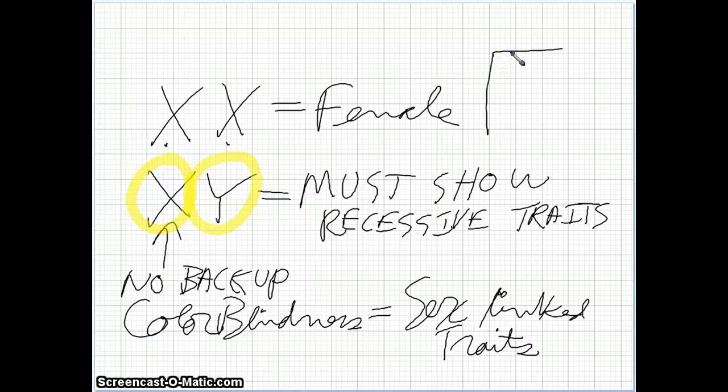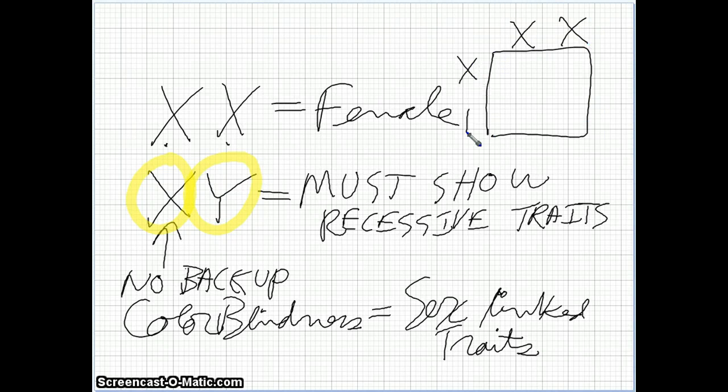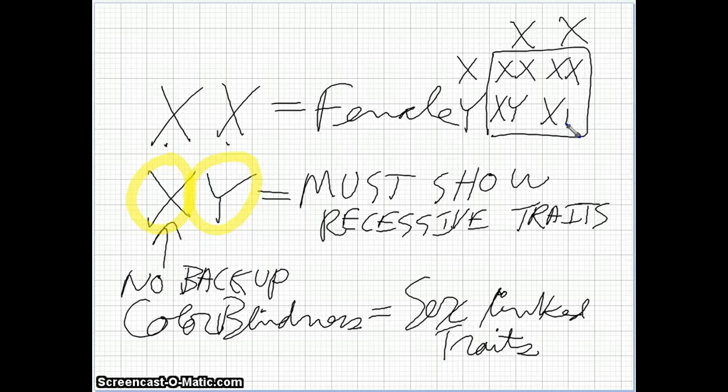So if we do us a quick Punnett square, where here's mom, here's dad, we get a possible girl, another possible girl, a possible boy, and another possible boy.